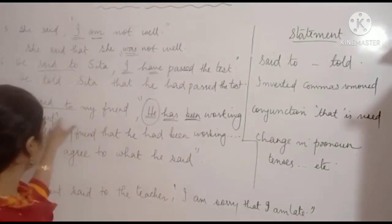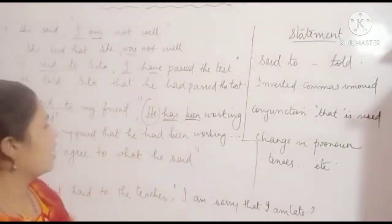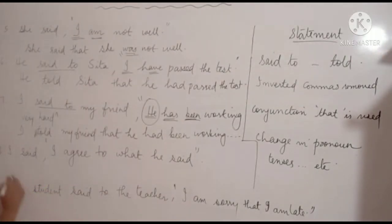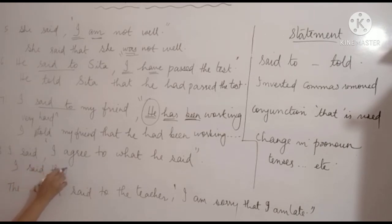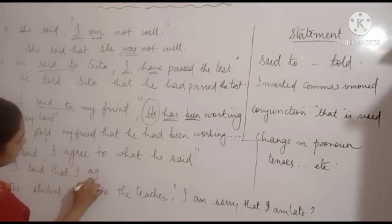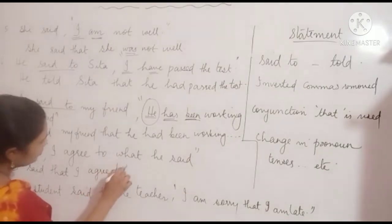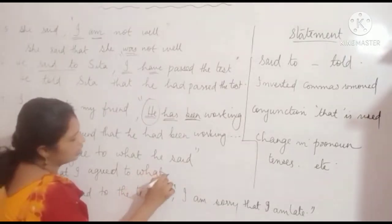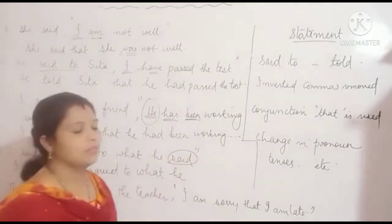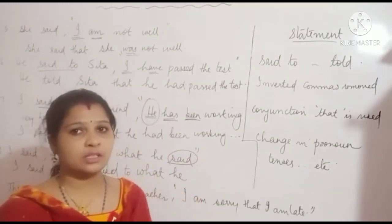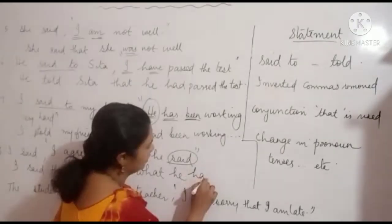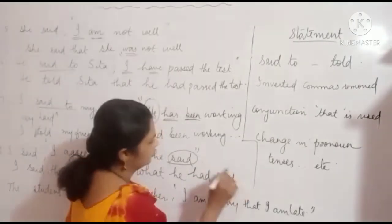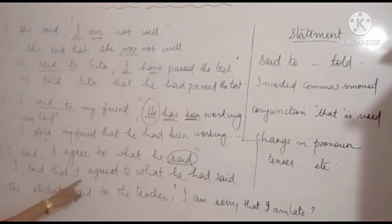Example 8: 'I said, I agree to what he said.' We write: I said that. 'I' remains 'I' here as subject. 'Agree' changes to 'agreed'. 'Said' inside the clause is simple past, so it changes to past perfect: 'had said'. Answer: I said that I agreed to what he had said.